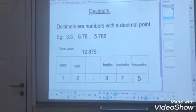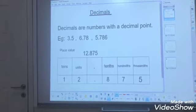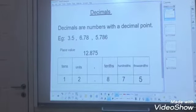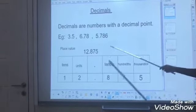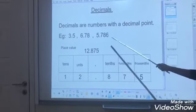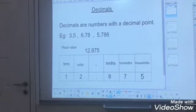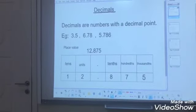3.5, 6.78, 5.786. Okay, here's why I read the last number as 5 point 7, 8, 6. Why didn't I say 786? Why?